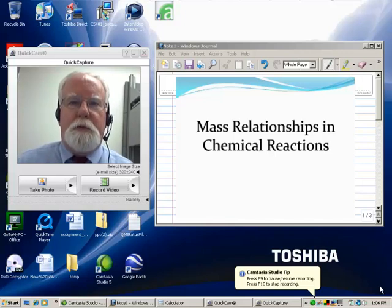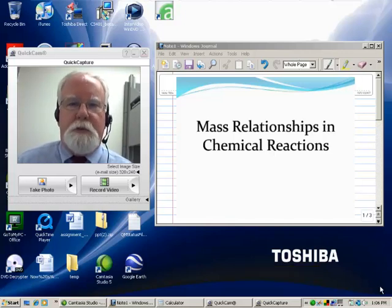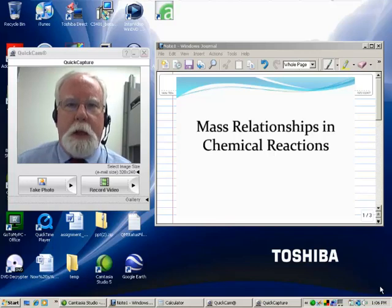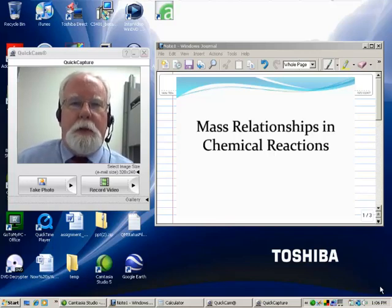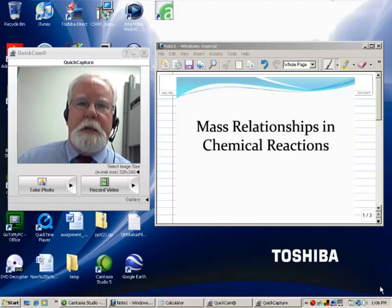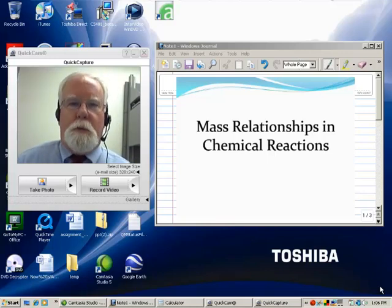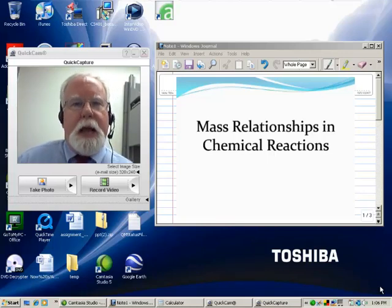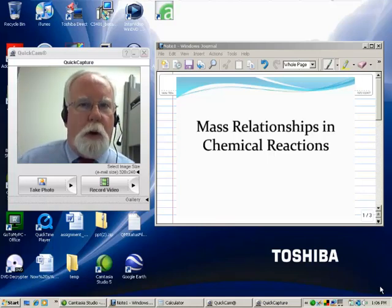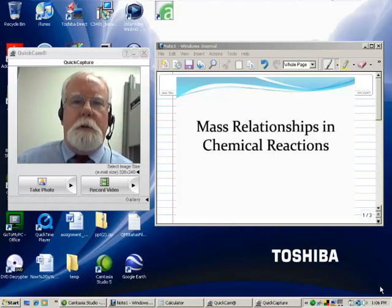Welcome to a video learning object on mass relationships and chemical reactions. We're going to be dealing here with chemical stoichiometry problems of the type where you're given a balanced chemical equation and a quantity of one or more reactants or products, and then asked to compute the quantity of another reactant or product that would either be produced or required in order to complete the reaction.